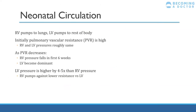In the neonatal circulation, the right ventricle goes to the lungs and the left ventricle serves the systemic circulation. Before and just after birth, pulmonary vascular resistance is really high. As the lungs expand, pulmonary vascular resistance decreases, so the right ventricular pressure starts to fall. In the first four to six weeks of life, the right ventricular pressure falls and the left ventricle becomes the dominant one, pumping against a much higher pressure — as it does in adults. The left ventricular pressure ends up being about five times higher than the right ventricular pressure.